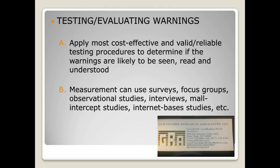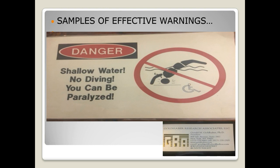Let me show you a few effective warnings. Here's a pool warning sign I designed that most of the pool industry accepts. It's got a good signal word: 'DANGER.' There's a reason it says danger — because the hazard is immediate. 'Shallow water' — that's the hazard, just two words. 'No diving' — and the consequence: 'You can be paralyzed.' I did a study and found that 90% of pool owners and users understood what the word 'paralyzed' meant. People resisted putting that word at first, but we tested it and found that 90% of the public familiar with pools understood you can become paralyzed by diving into shallow water.